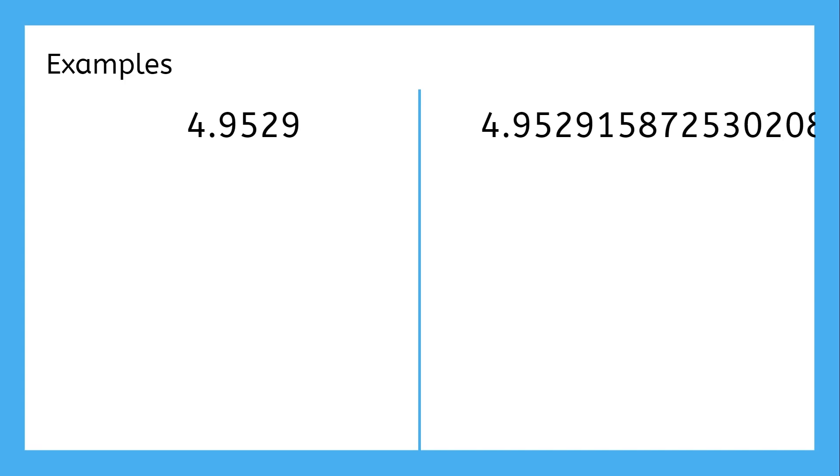4.9529 is a decimal that ends, so we can write it as 49,529 divided by 10,000, which makes it rational. The other decimal is so long it goes off the page, and the digits look completely random rather than repeating, so this must be an irrational number.